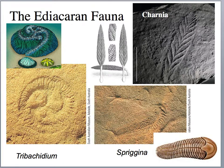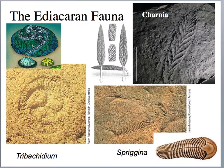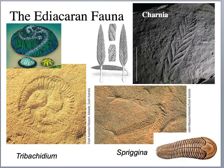Now let's talk about the Ediacaran fauna — probably the first multicellular eukaryotic community of animals we find in the fossil record, dating back to about 635 million years, at the base of the Noonday Dolomite. The type locality is at the Ediacaran Hills in Australia. Tribrachidium resembles some sort of echinoderm or sand dollar-like organism. Charnia is a strange organism that looks like a plant, but is actually some sort of animal that lived on the deep, dark sea floor with no sunlight — not doing photosynthesis, probably collecting energy from the sediments around it.